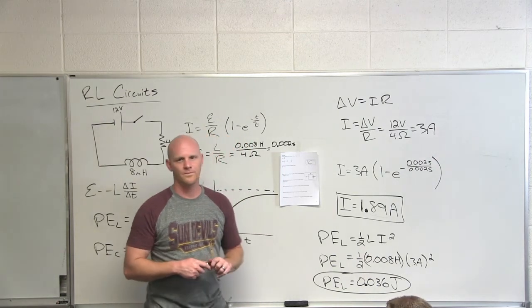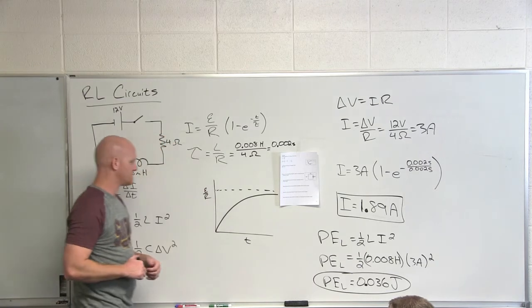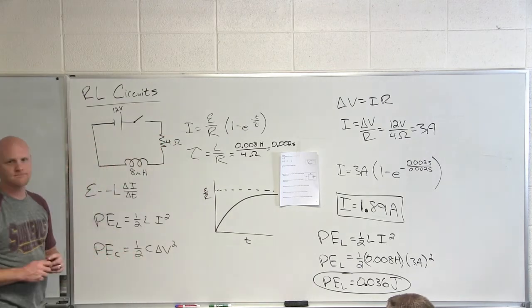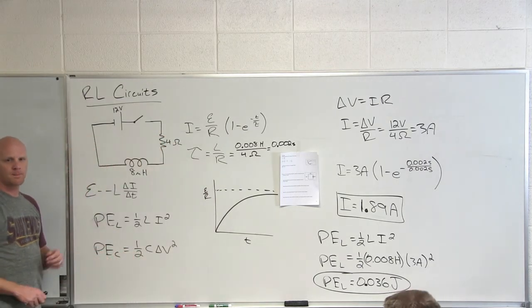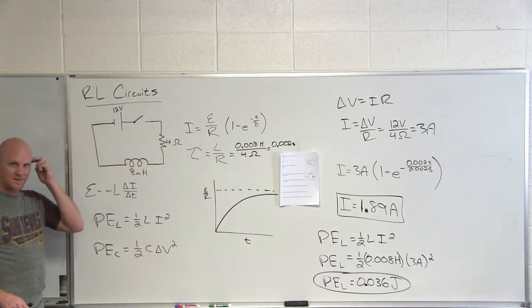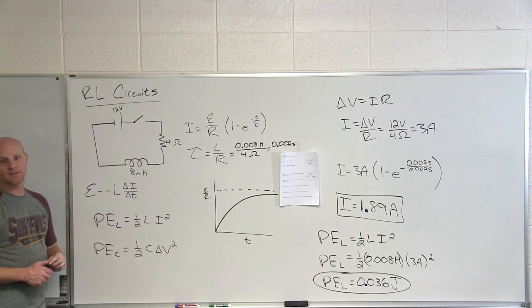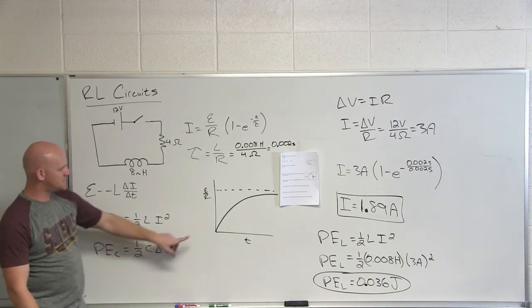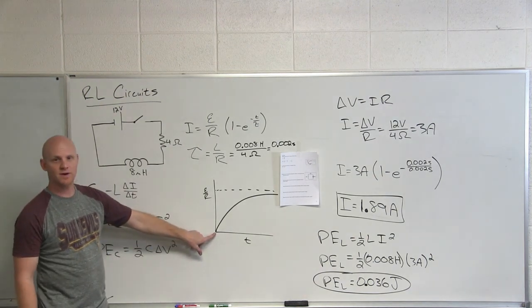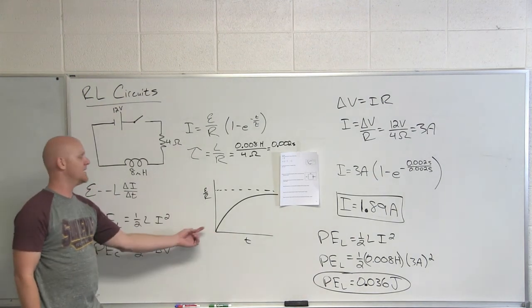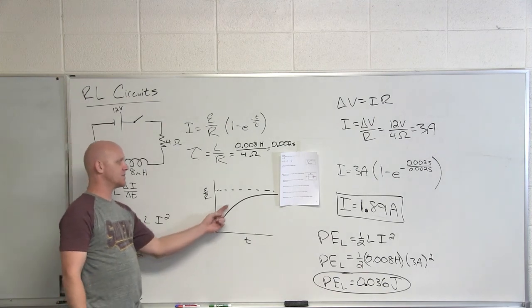For potential energy to actually be stored, you need current flowing. At time zero, the potential energy stored in the inductor is zero. It gradually grew as the current increased, which makes sense since the energy is stored in the magnetic field generated by that current.